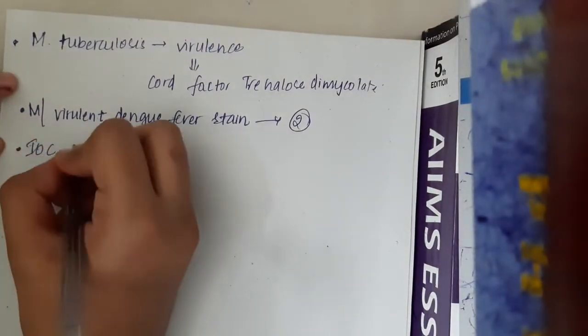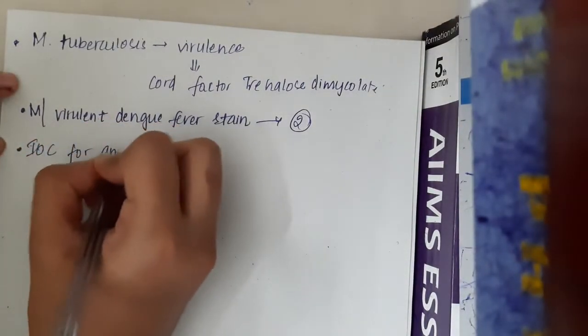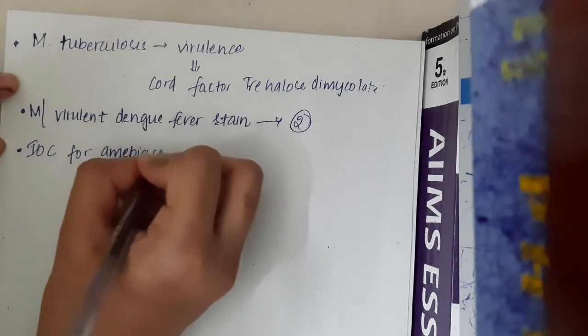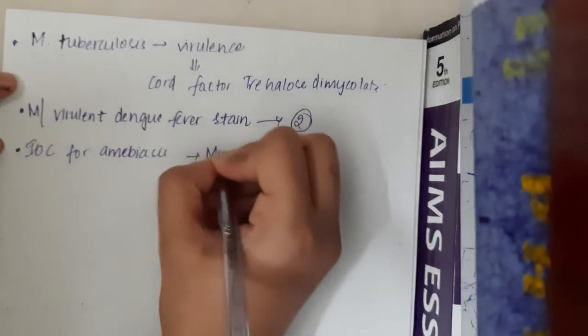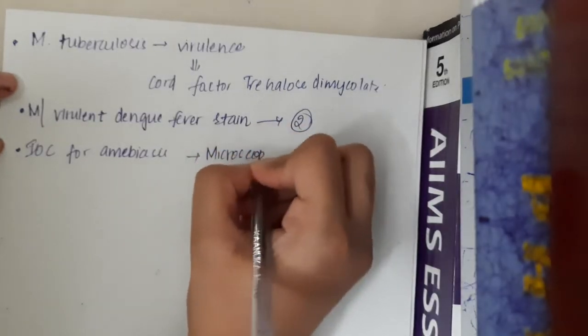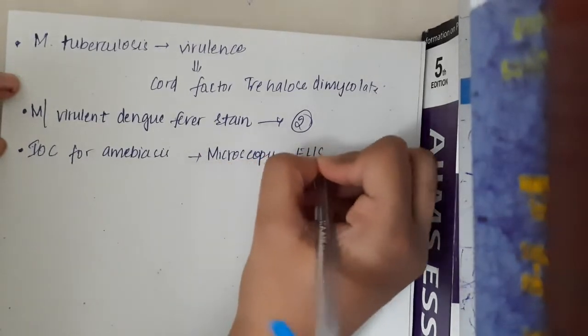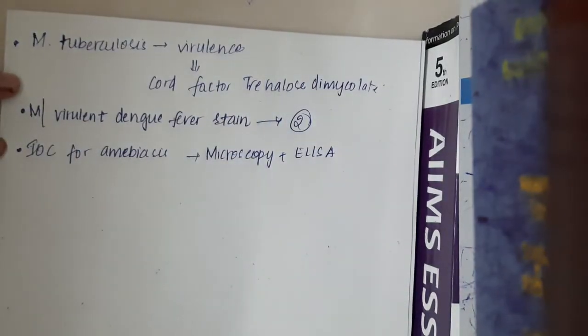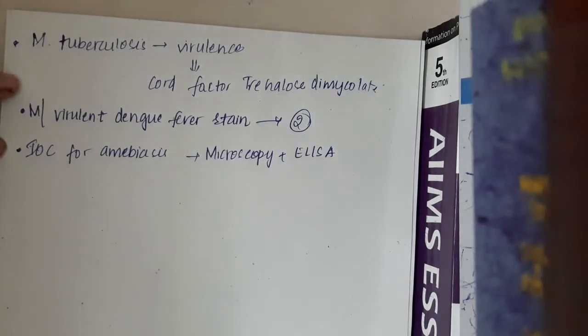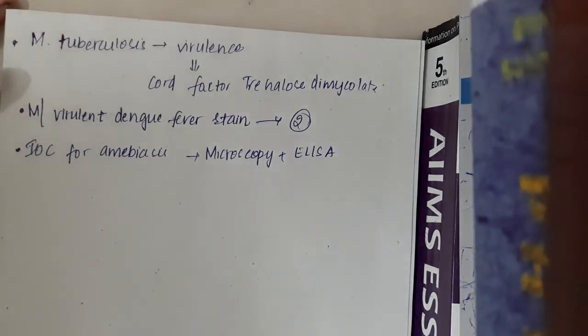What is the investigation of choice for amebiasis? Investigation of choice for amebiasis is microscopy with ELISA. So these are important points about microbiology for today. Thank you guys for watching my lecture.